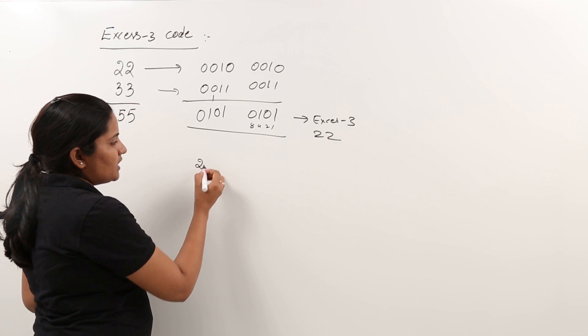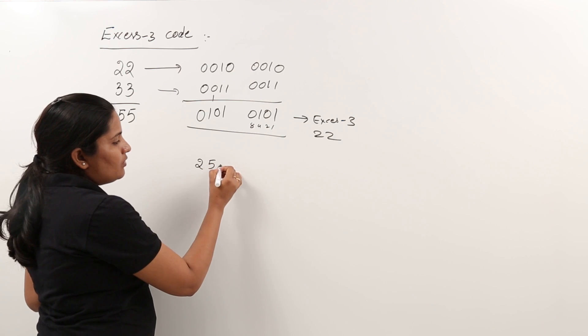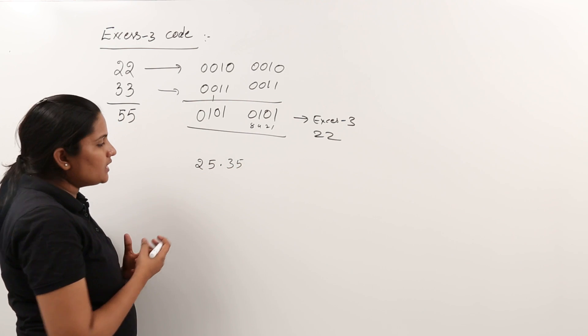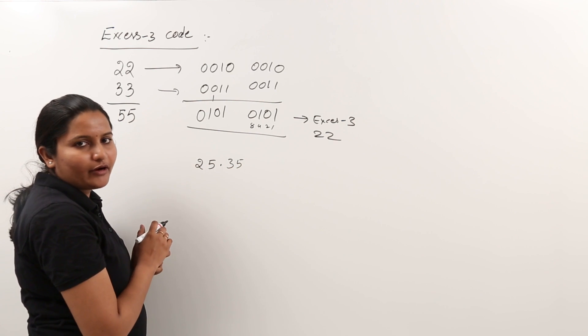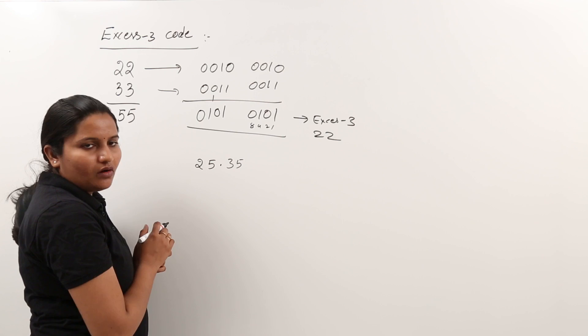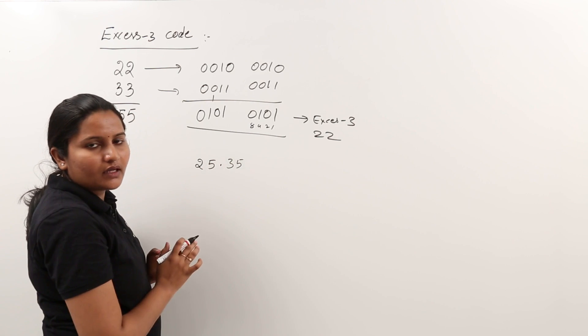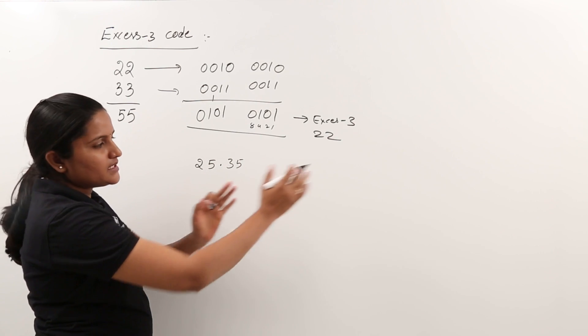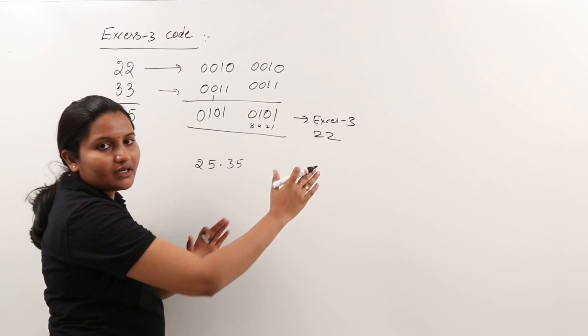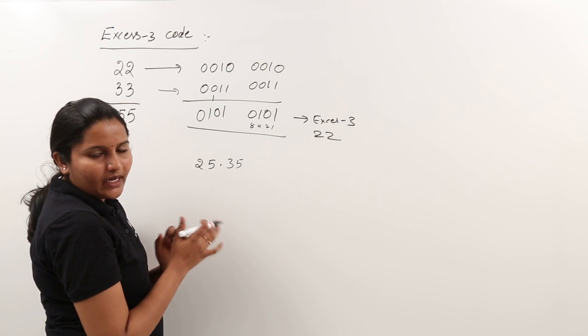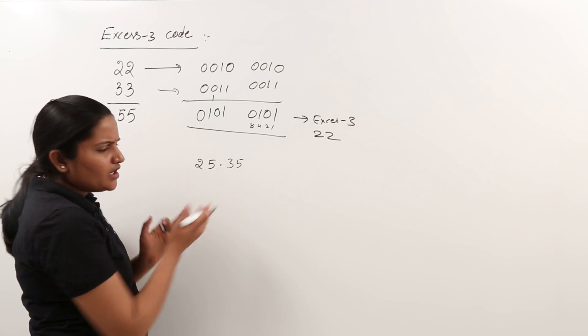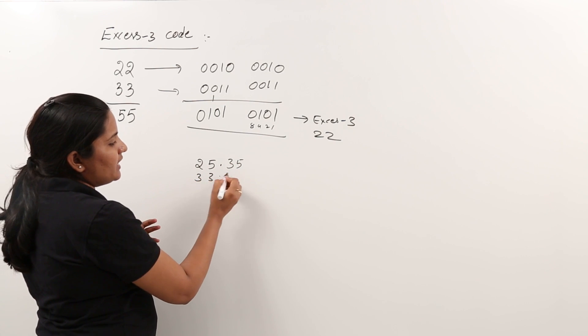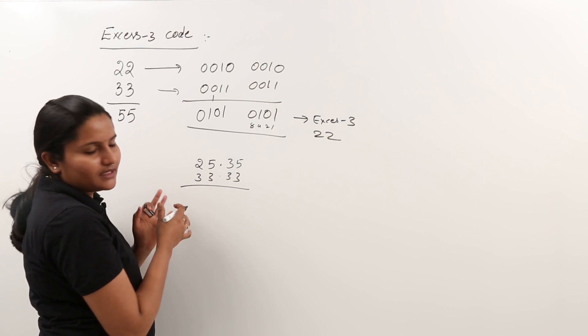For example, anyone asks you what is the XS3 code for 25.35? Or they give BCD code and they are asking what is the XS3 code for that BCD? Same number they are given in BCD code. Just decode into decimal and you just add 3 for each digit.